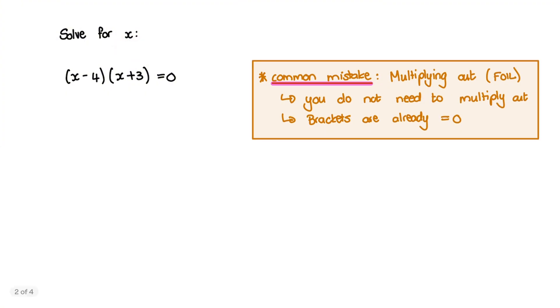The reason you do not need to multiply out is because the expression on the left is already factorized, meaning we have the expression in brackets, and the brackets are already equal to 0. So this equation is already in standard form.